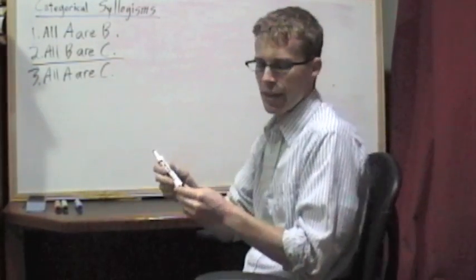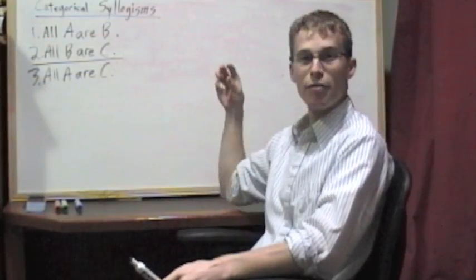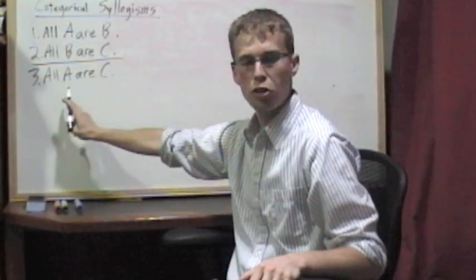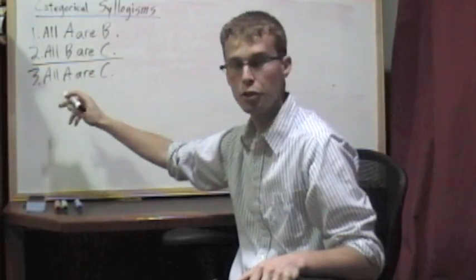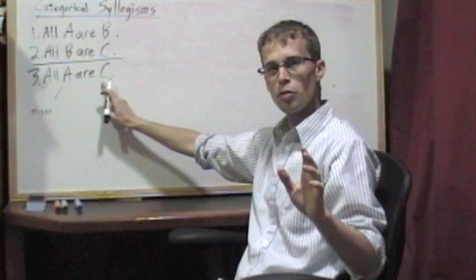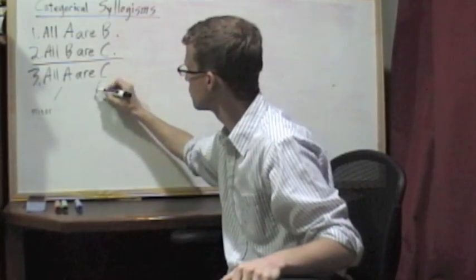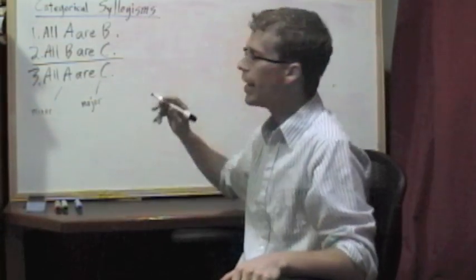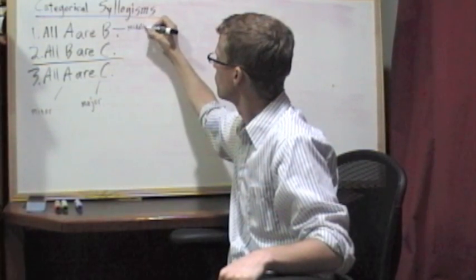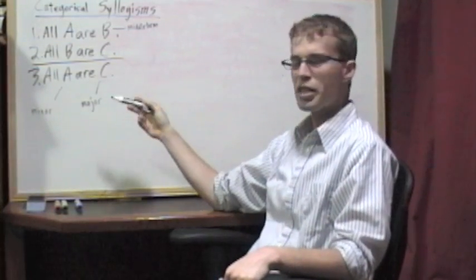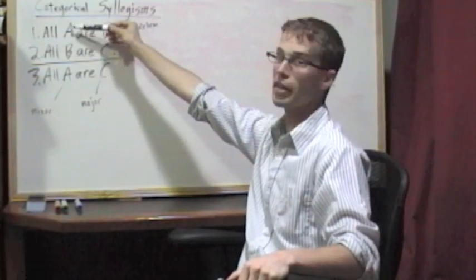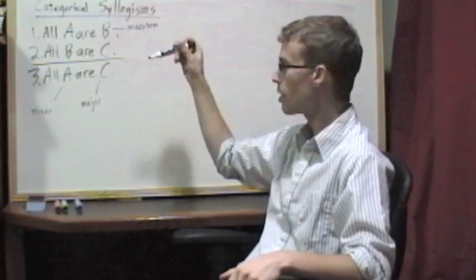Now, I told you before that when you're Venn diagramming just one claim, you've got two categories. Now we have three different categories: A, B, and C. The first term, the subject term in your conclusion is known as the minor term. The predicate term in your conclusion is known as the major term. And the one that's left out, the one that's stuck in the middle, that's the middle term. These are ways to refer to the term by itself outside the argument. So minor term applies to this A here and the A up there. Middle term applies to both of the Bs, and major term applies to both of the Cs in this example.